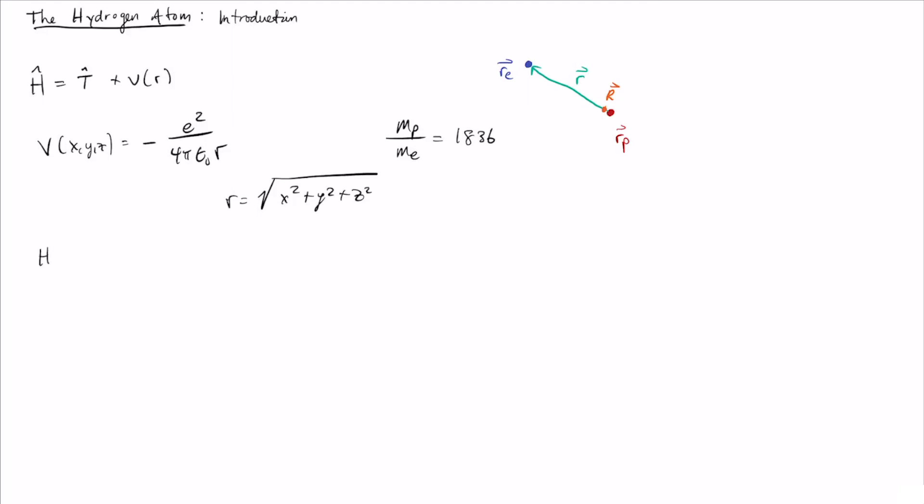So the full Hamiltonian then is: H equals minus ℏ² over 2m_e—m_e is the mass of the electron—and then del squared, and then minus e² over 4πε₀r. This is the Hamiltonian. This is everything that we need to know in order to find the allowed energy states for the hydrogen atom.